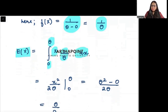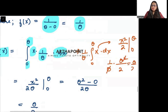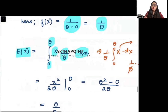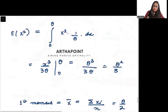So this becomes x times 1/theta; 1/theta comes out and the integration of x dx gives x²/2, evaluated from 0 to theta. This gives theta²/2 divided by theta, which gives theta/2. So the mean comes out to be theta/2.